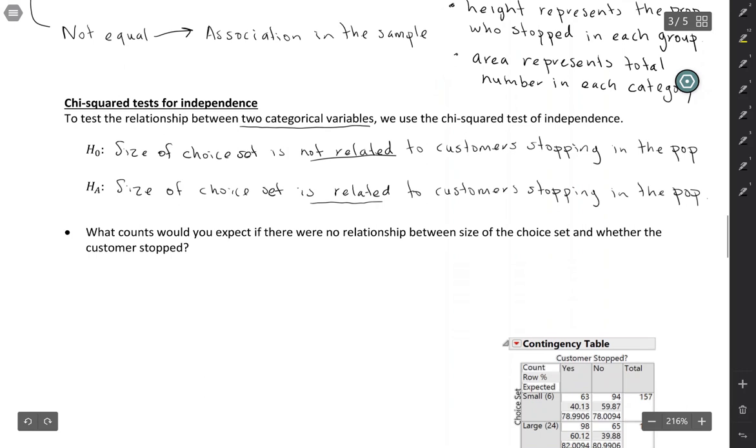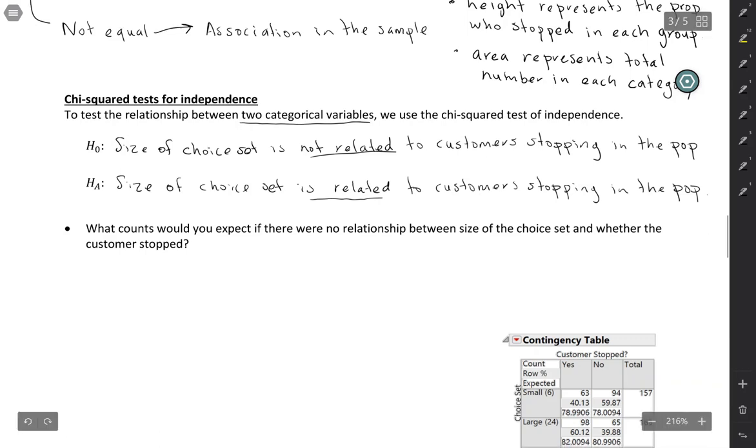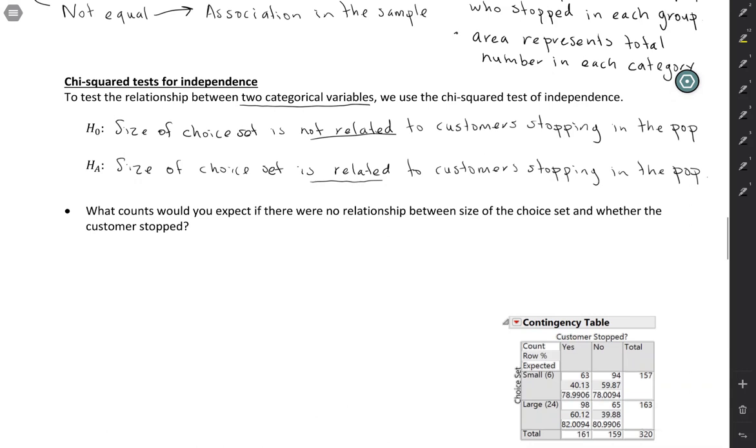Chi-squared tests work by comparing observed counts to expected counts, and those were pretty easy to calculate in a goodness-of-fit context. It's a little bit trickier here. So when we say expected counts, we mean what would you expect if there were really no relationship between these two. So basically, you're saying that choice set doesn't matter, it makes no difference in the proportion who stop.